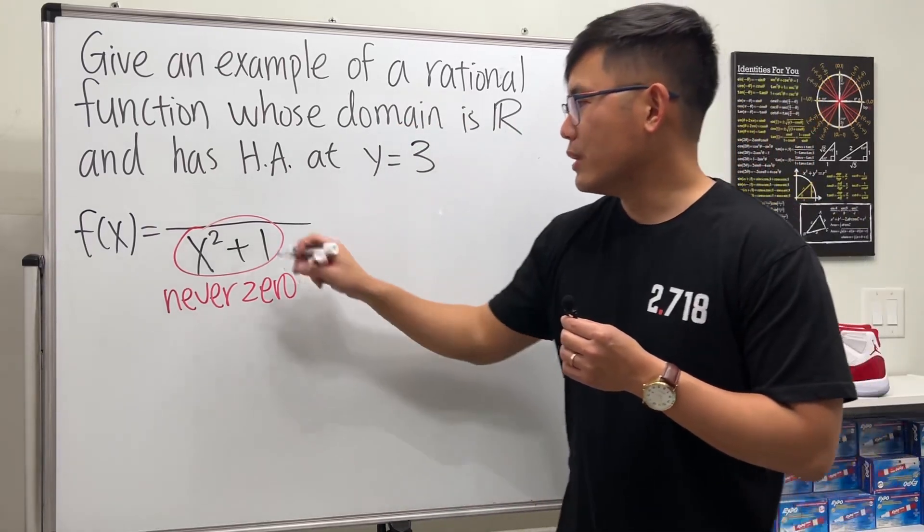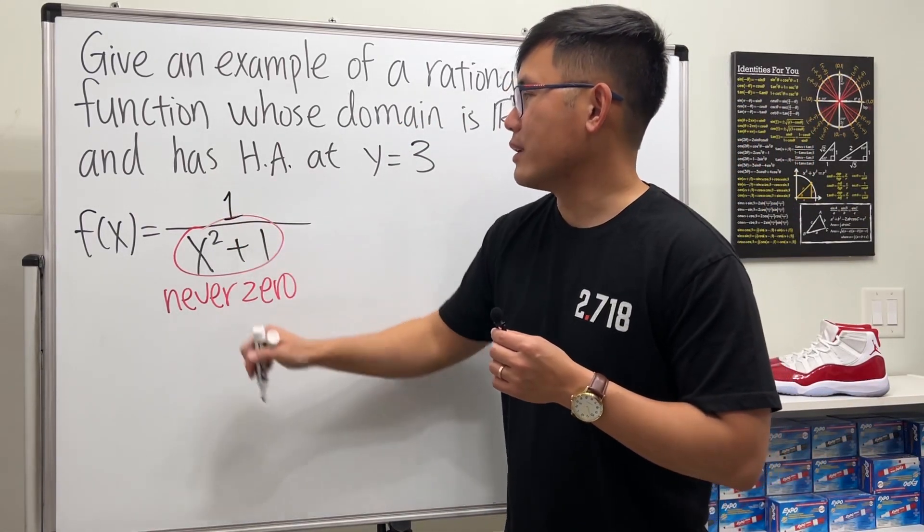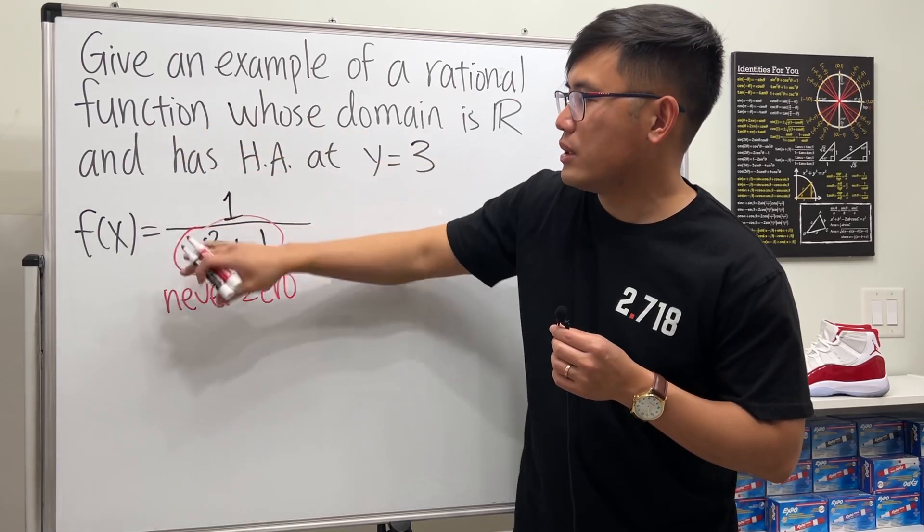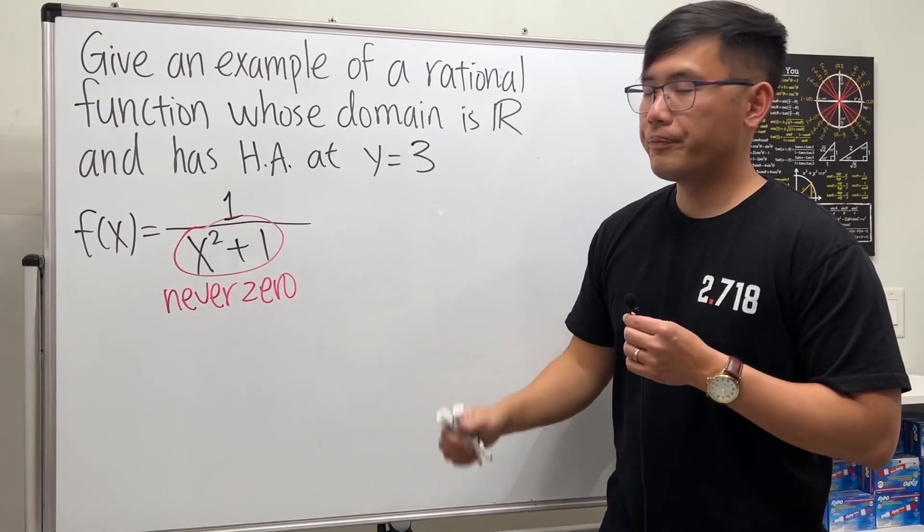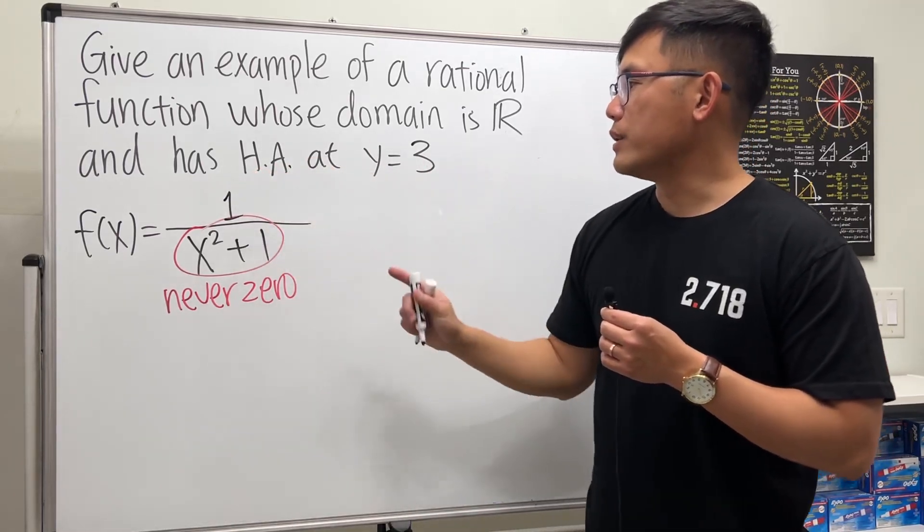Alright, so with this on the bottom, the domain will just be the set of all real numbers. And if you want to just finish it, you say 1 over x squared plus 1, especially if we don't have this condition, then this will satisfy this part.